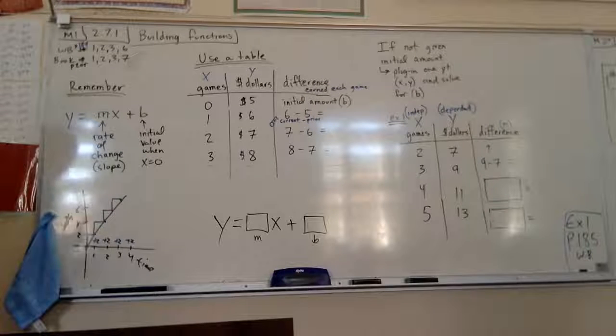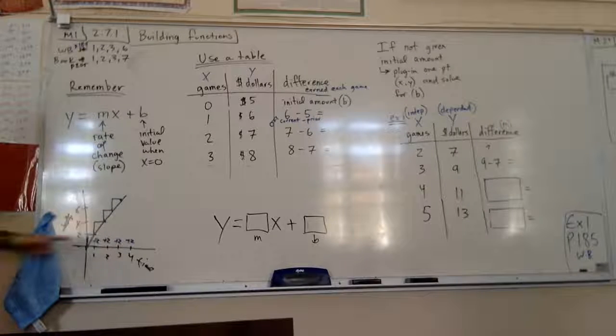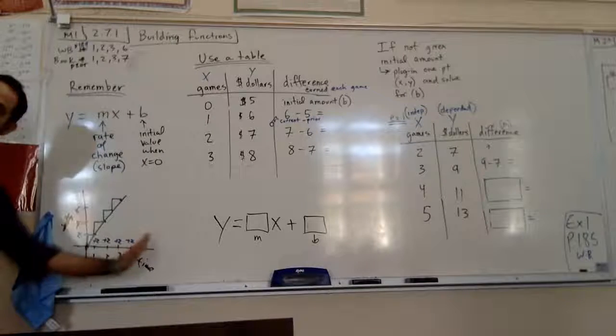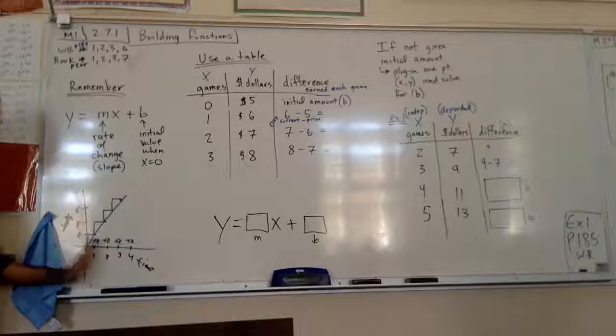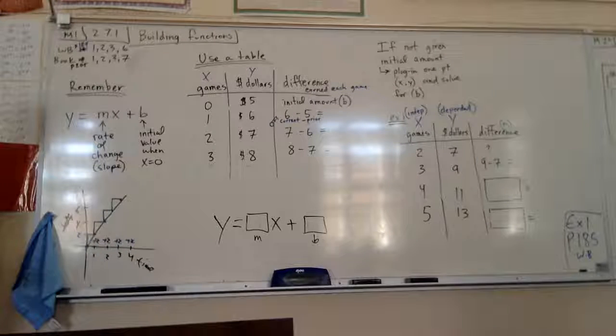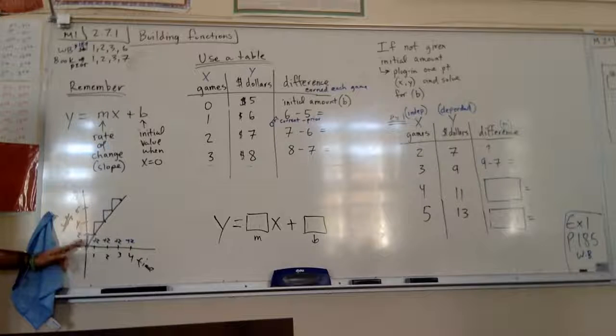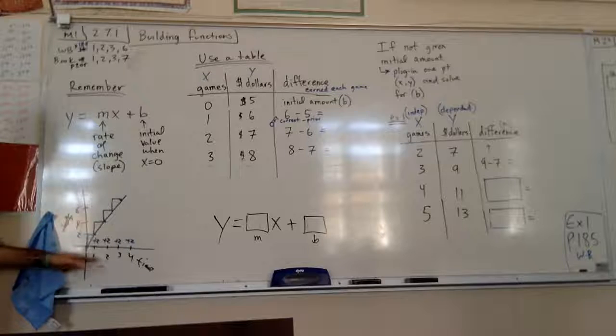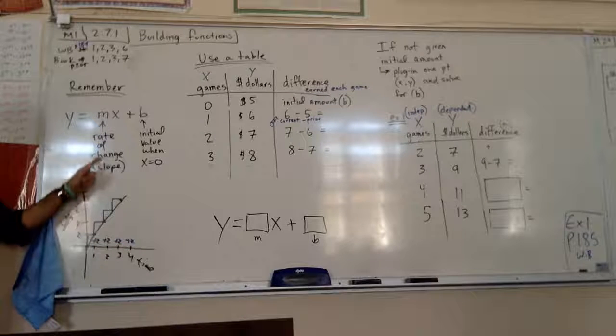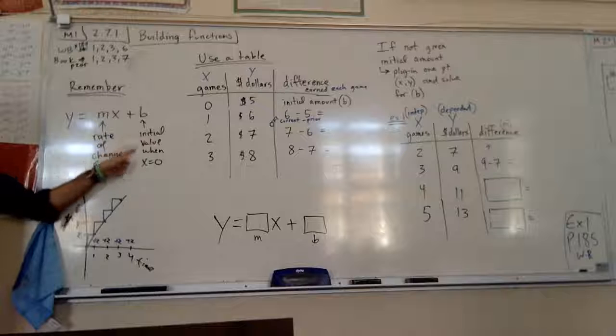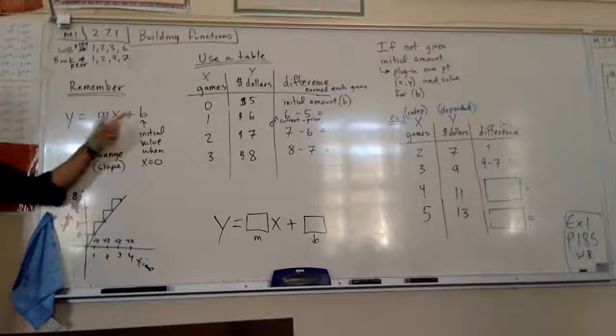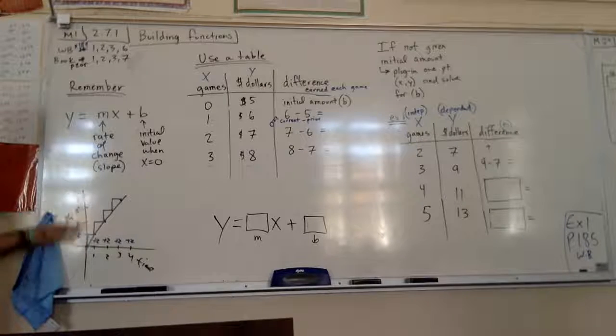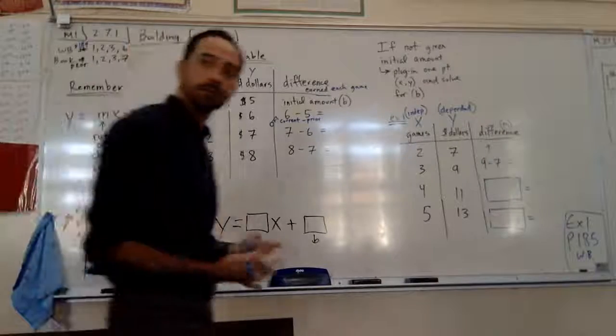My B value is just going to be my initial value. Because think about this. If I am at x equals zero, here's x equal to three, two, one, zero. At x equals zero, I'm on this y-axis. So when I plug in x for zero here, what happens to this term? Goodbye. Anything times zero would be zero. So when you plug in x for zero, you're going to find your initial value, your B value.